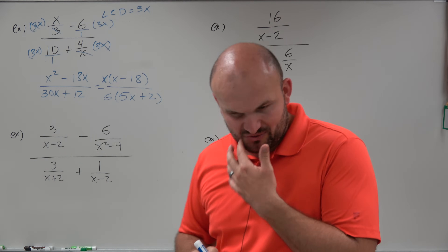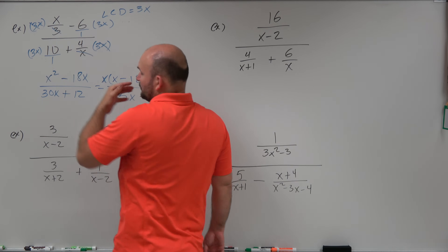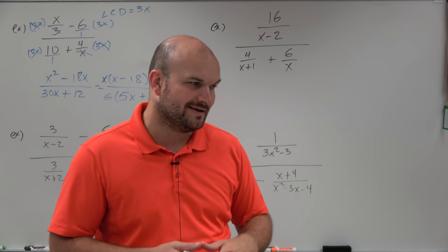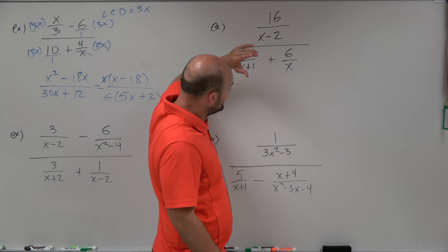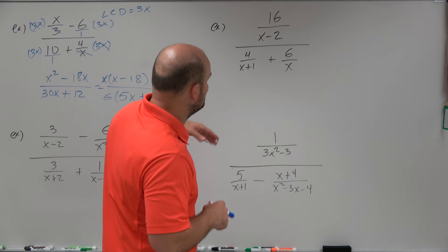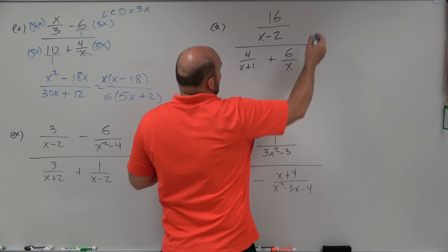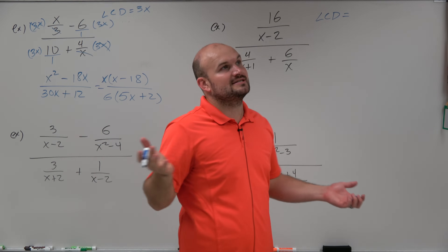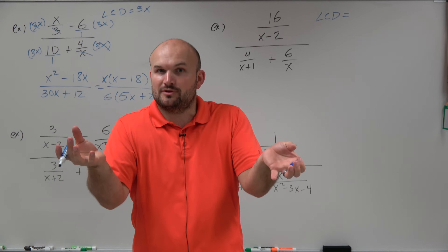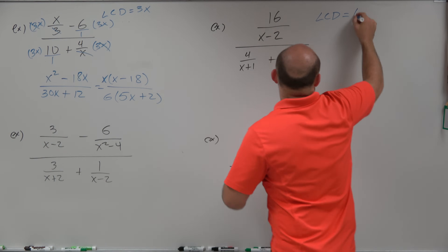In the next example, finding the LCD gets a little tricky. Students are usually OK finding the LCD of numbers, and even when a variable is involved, but they really have trouble finding the LCD of expressions. The easiest way to think about it: the LCD is a number that every single one of your denominators divides into. So if you multiply all the denominators together, they're all going to divide into that product. For instance, 5 times 6 is 30, and both 5 and 6 divide into 30. So multiplying all the distinct factors together gives us our LCD.